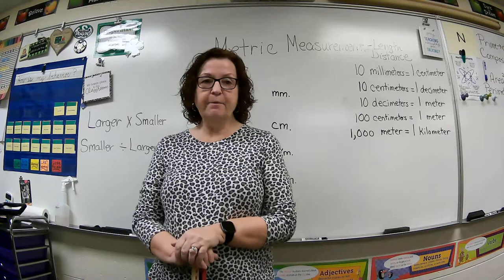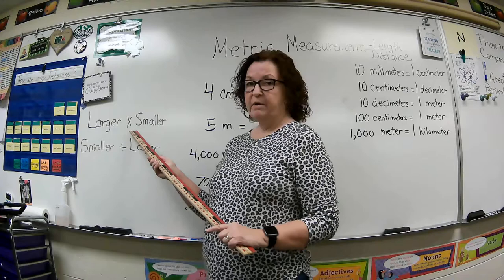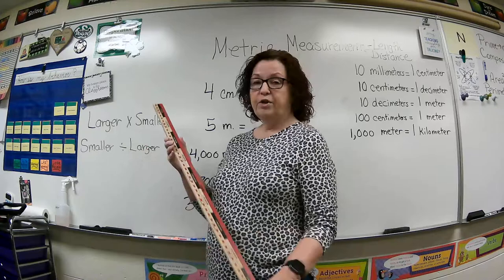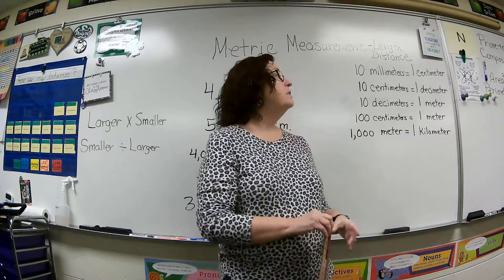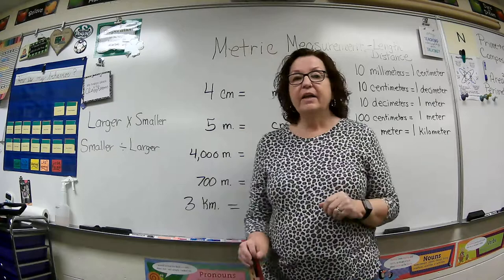When you're going to be doing some converting today, remember: if you're going from a larger unit to a smaller unit of measurement, you're going to multiply by however many of the smaller unit is in the larger unit. And if you're going from a smaller unit to a larger unit of measure, you're going to divide. So starting from the smallest: millimeters, centimeters, decimeters, and then meters.